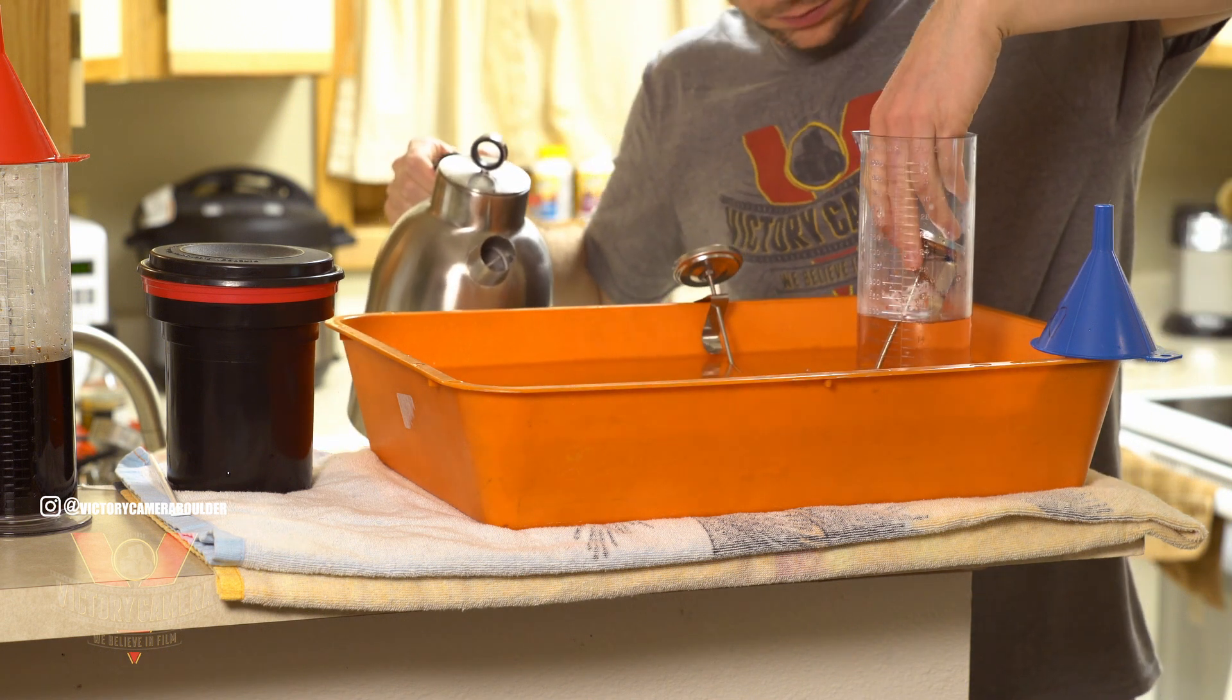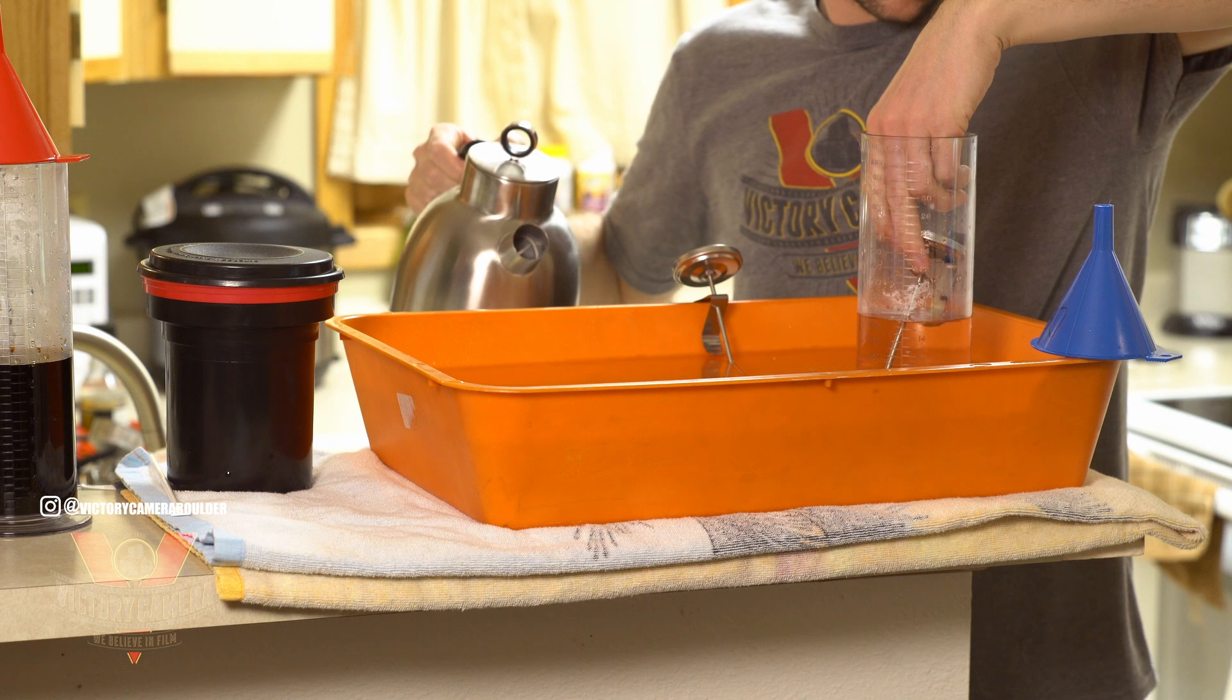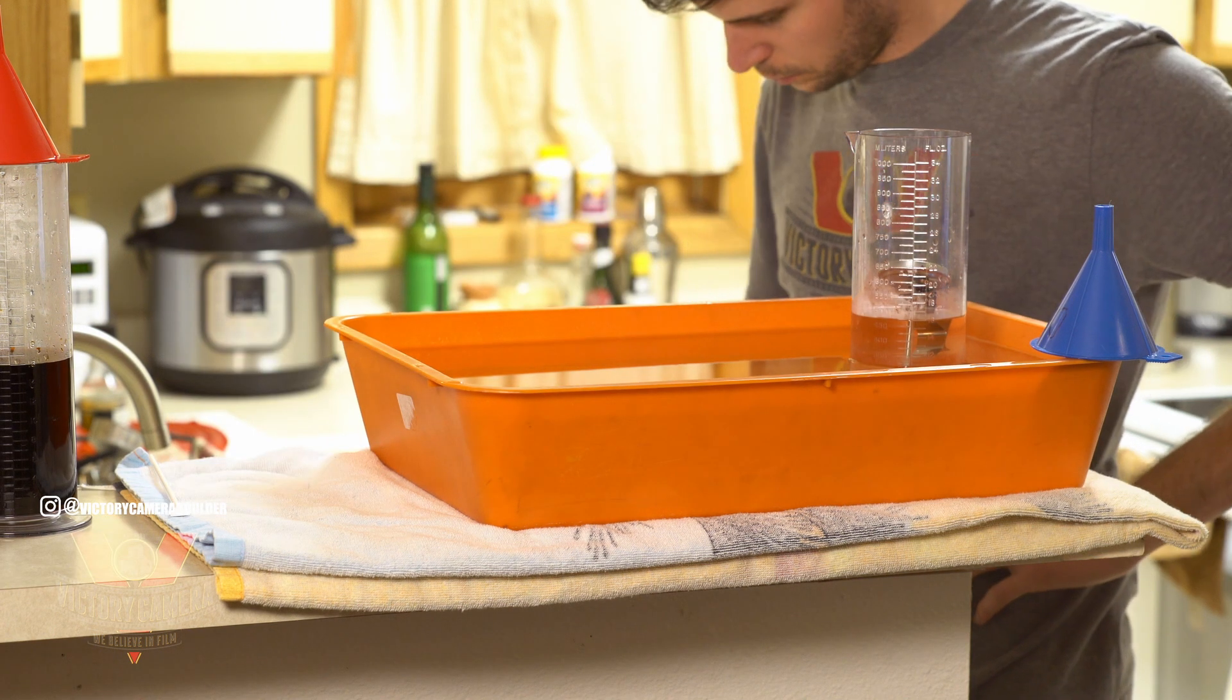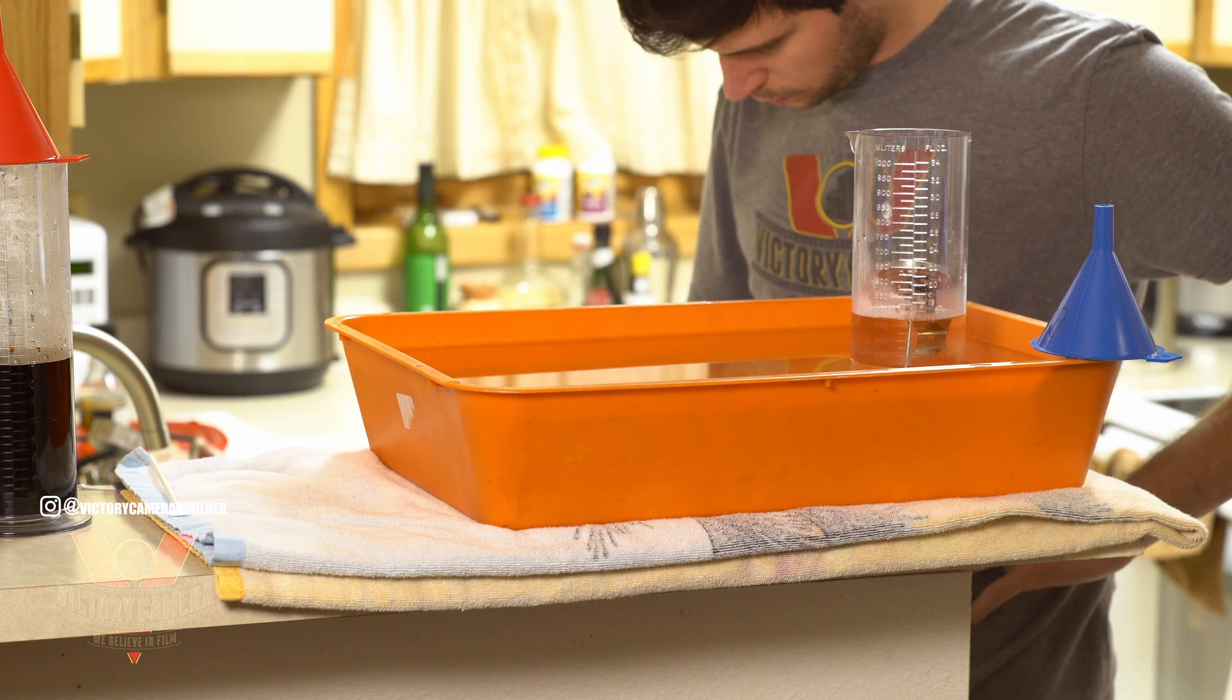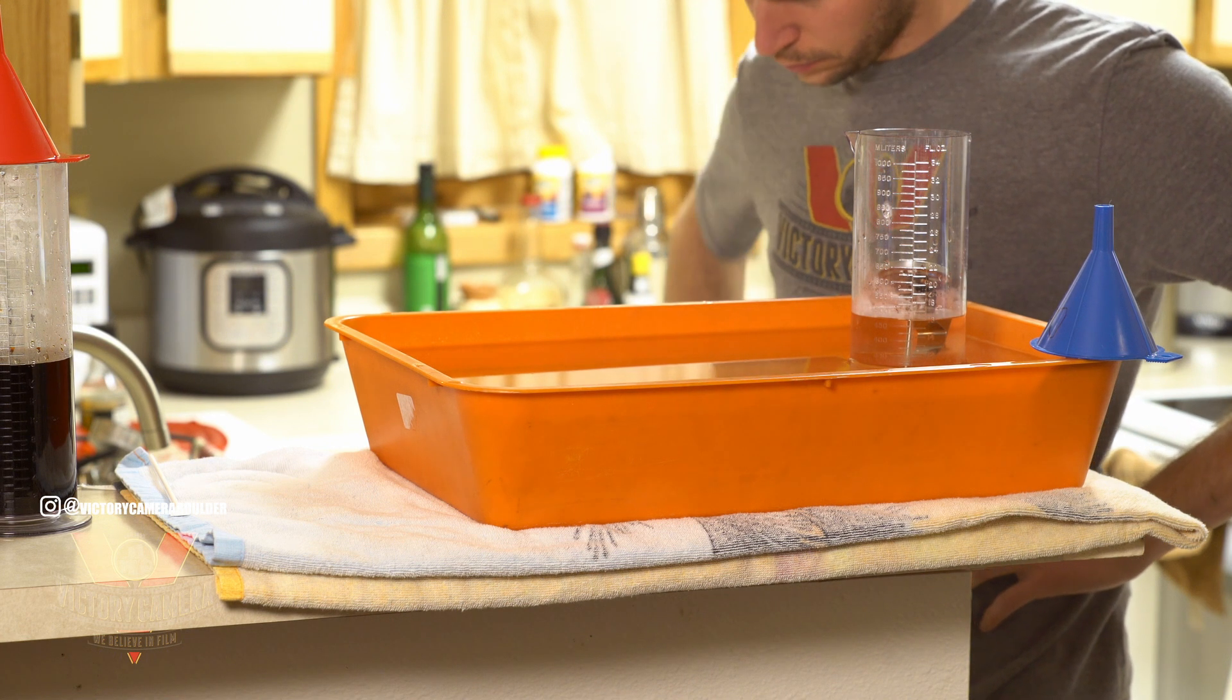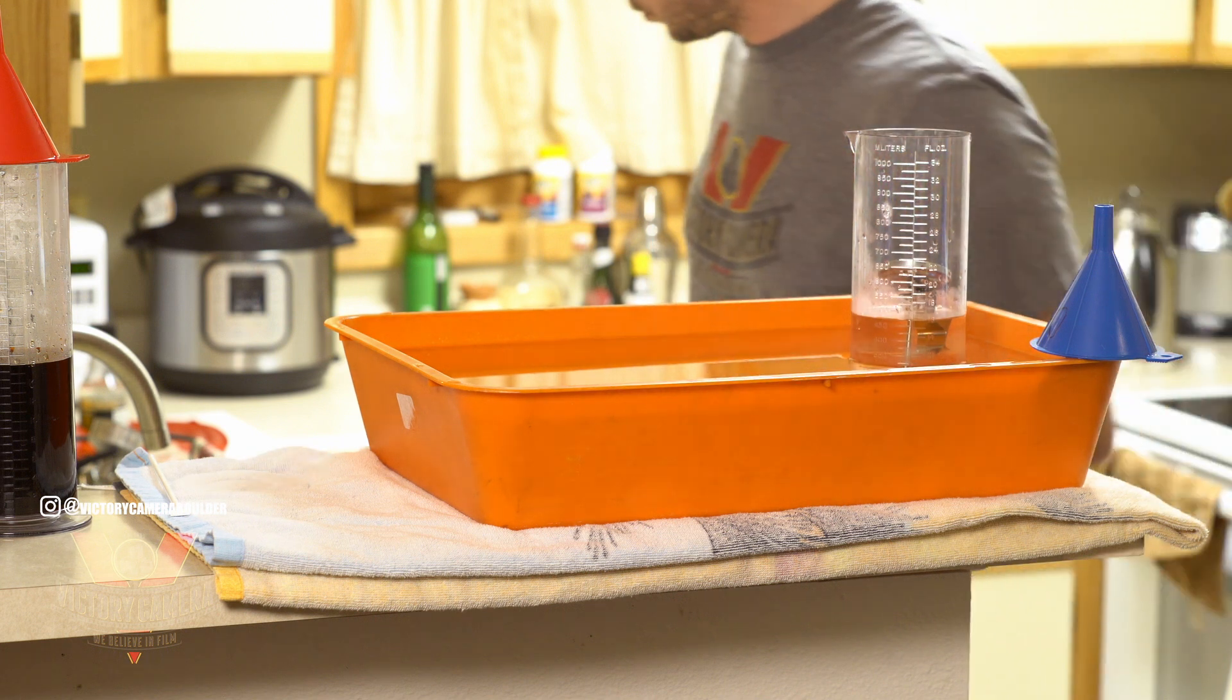I'll get the water in this tub a few degrees over the target temperature and keep an eye on my thermometer. Now we've got our three solutions set up, our developer's hot, our Blix can be in the bath or not, and our stabilizer is room temperature. We want to leave room in our bath for the developing tank to sit in it between agitations.